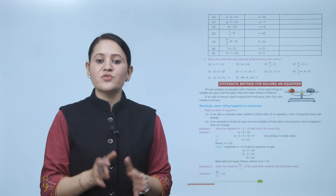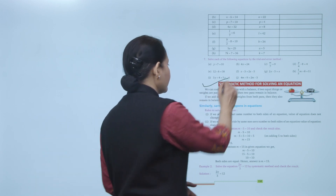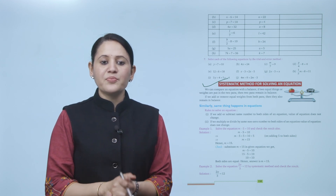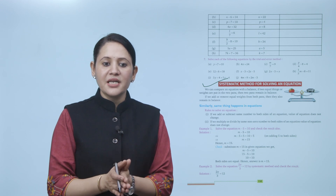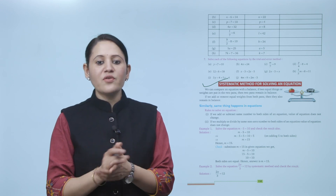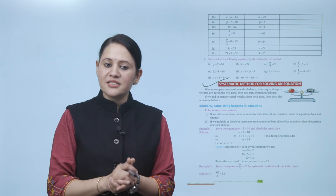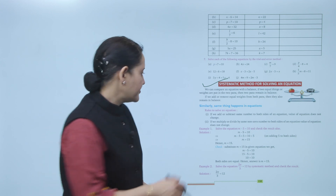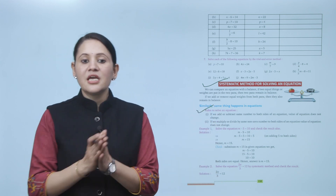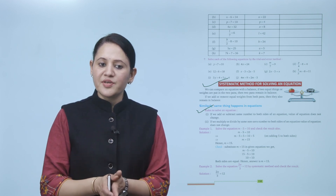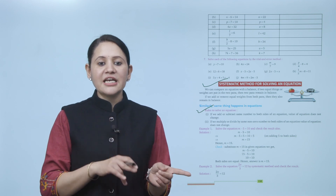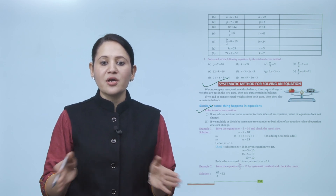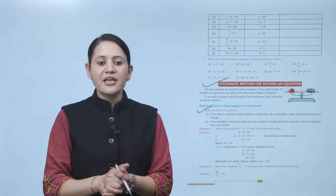Next is the systematic method for solving an equation. We can compare an equation to a balance. If two equal weights are placed on two pans, they remain balanced. If we add or remove equal weight from both pans, they remain balanced. Similarly, if we add or subtract the same number on both sides of an equation, its value does not change. Likewise, multiplying or dividing by the same non-zero number on both sides does not change the equation.